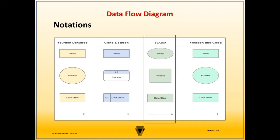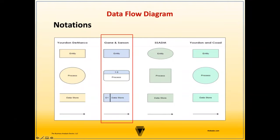The SSADM notation, which stands for Structured System Analysis and Design Method, usually swaps how the shapes are used. Here the entity has a circular shape while the process is a square. The data store is a rectangle with the right side open, and the data flows are lines with arrows. In the Gane-Sarson notation, entities are rectangles, processes are rounded rectangles, and data stores are rectangles with the right side open. The process node and data store include reference numbers, which we'll discuss later. Through the remainder of the lesson, I'll be using the Gane-Sarson notation.